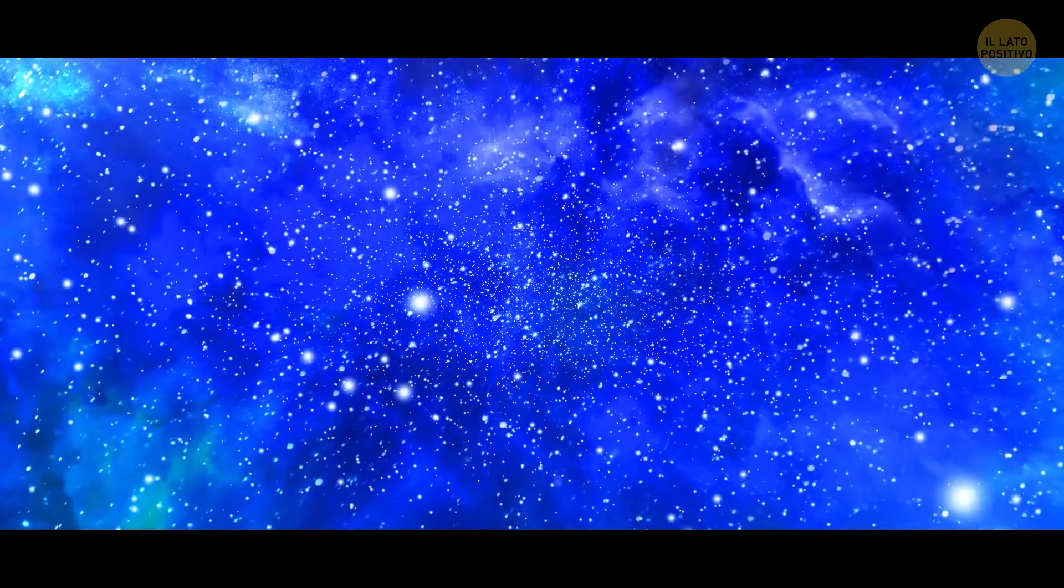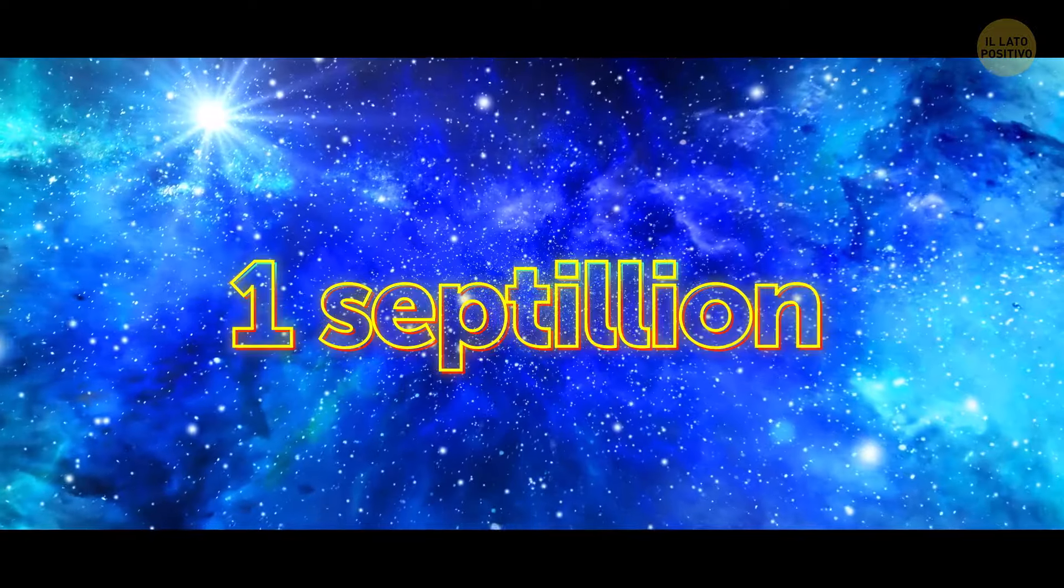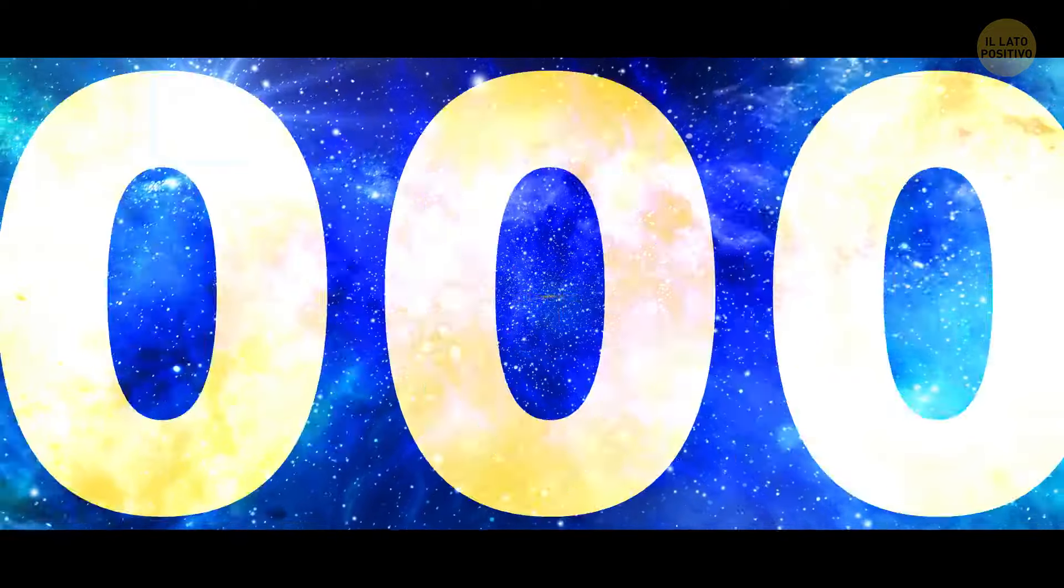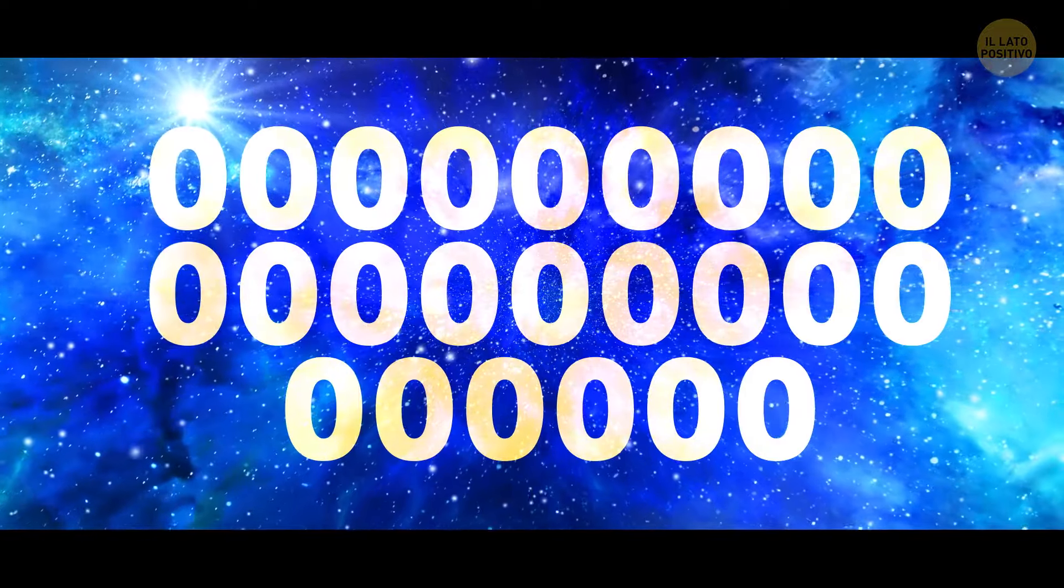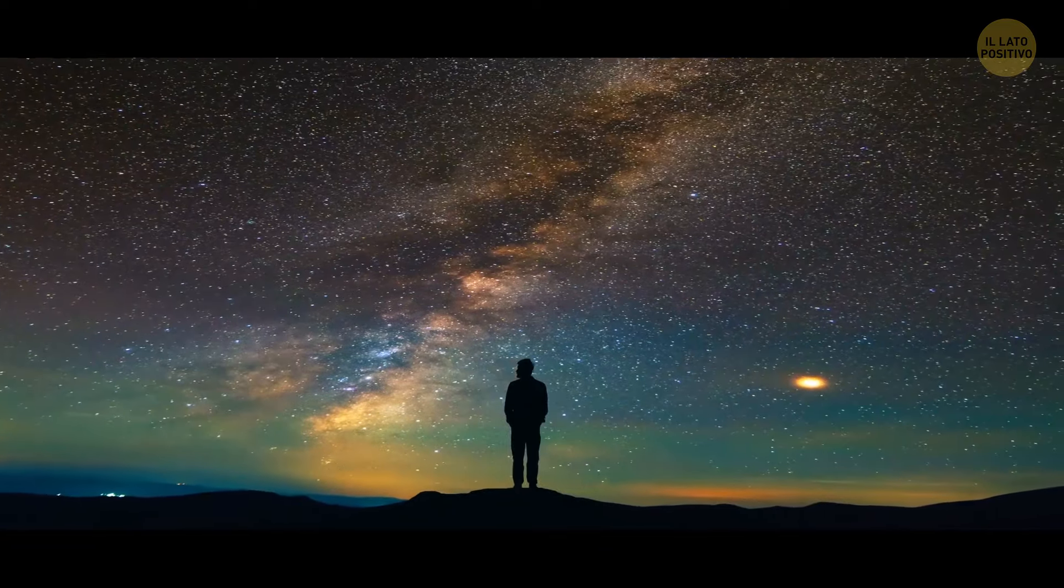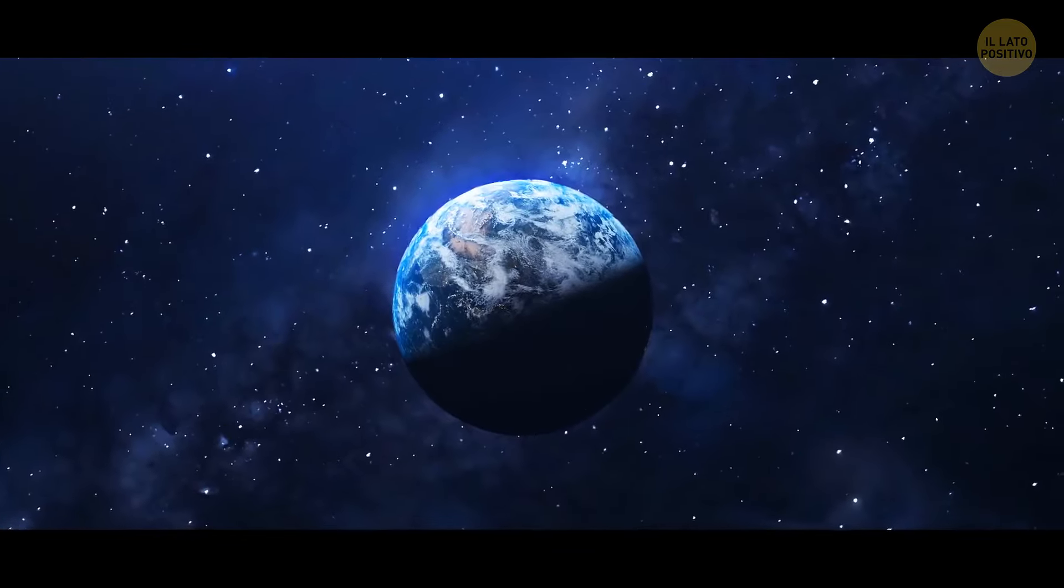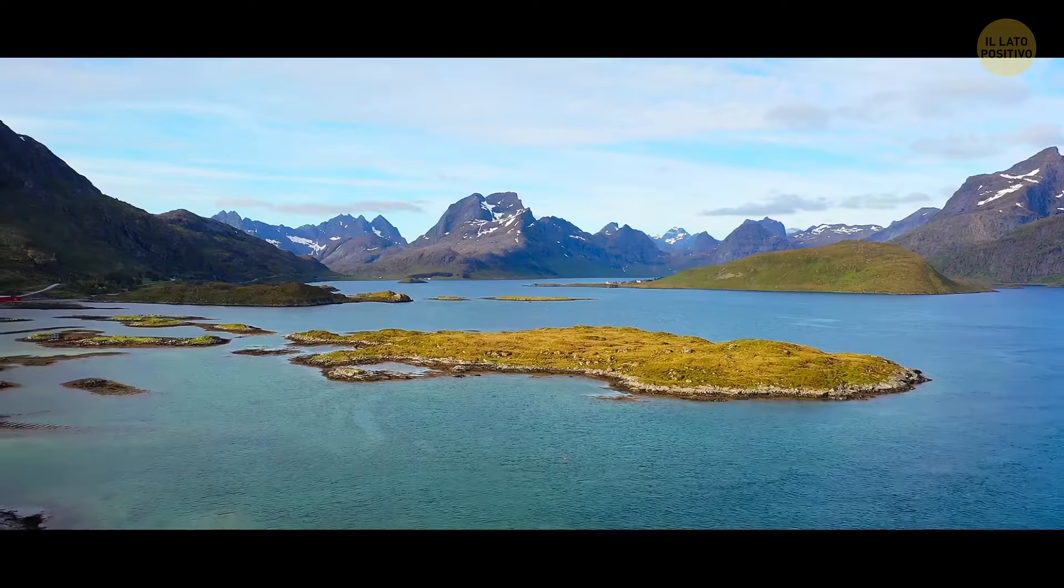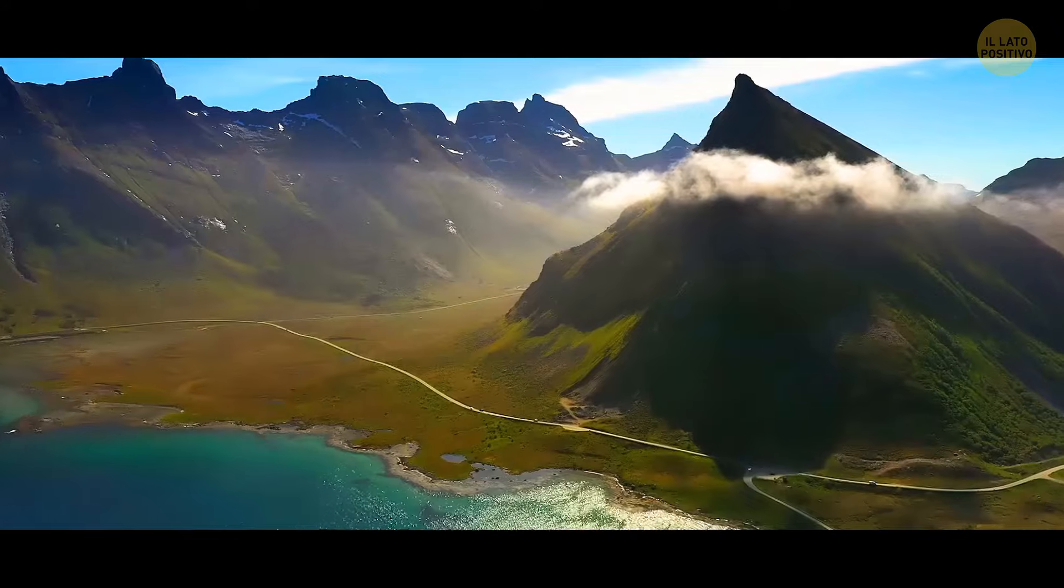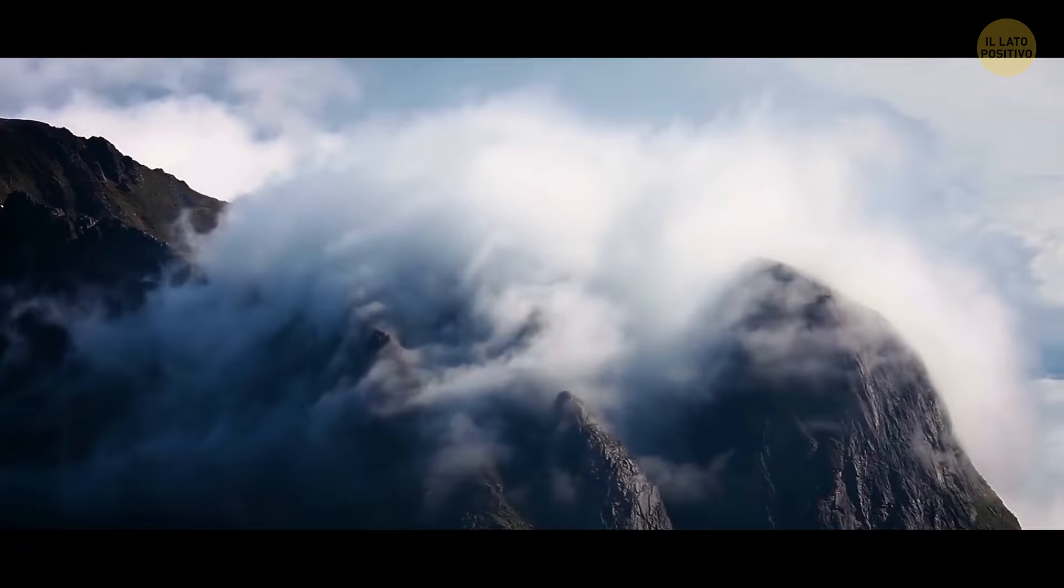As for how many stars there are in the universe, scientists put it at 1 septillion. That's 1 followed by 24 zeros. Again, it's all estimates, because we can't know for sure. So far, one thing is clear. Our Earth is the only place in the universe that we know of where there's life.